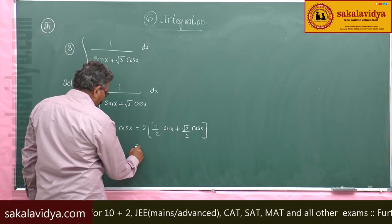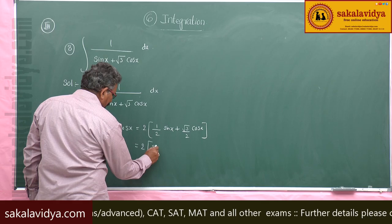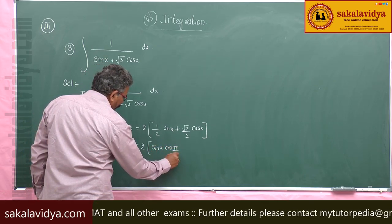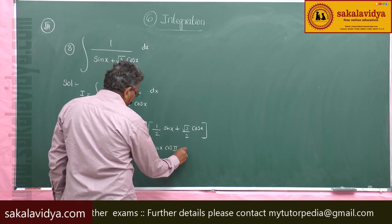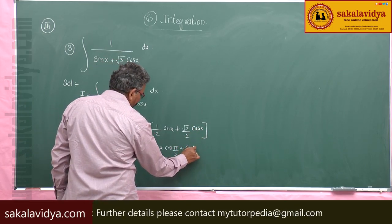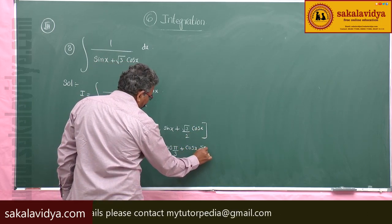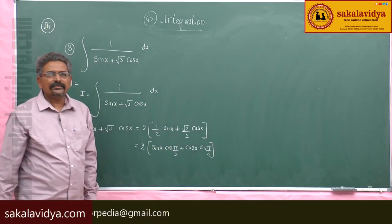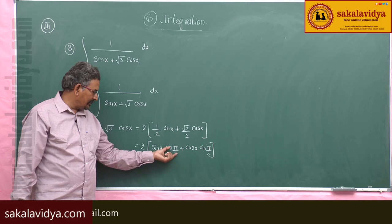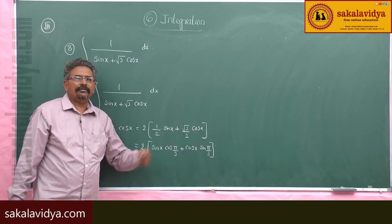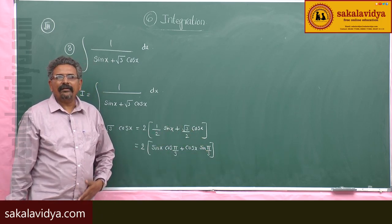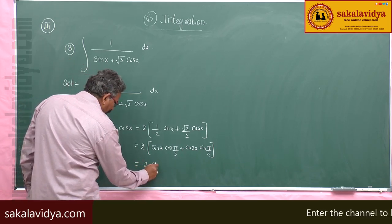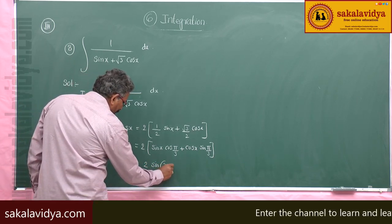So this can be written as 2 times (sin x · cos(π/3) + cos x · sin(π/3)). From the compound angle formula, sin A cos B + cos A sin B = sin(A + B). So this becomes 2 times sin(x + π/3).